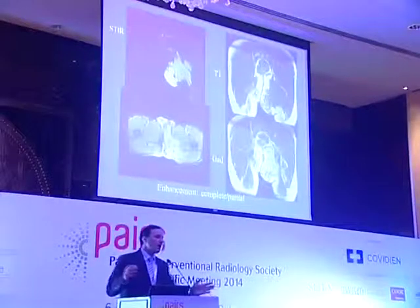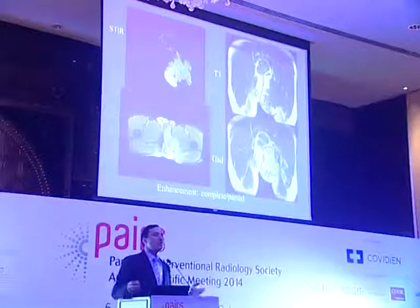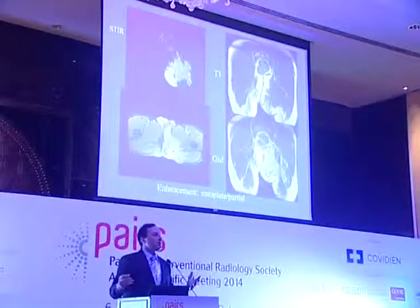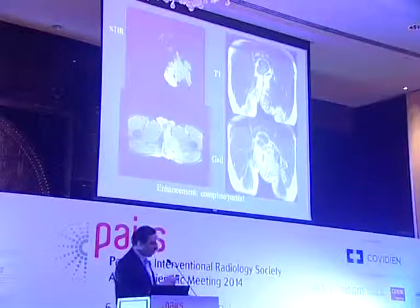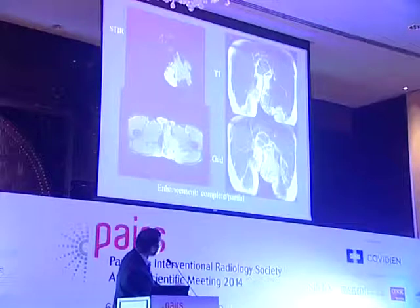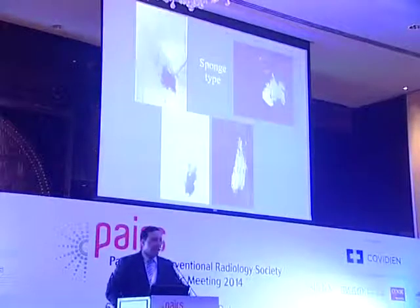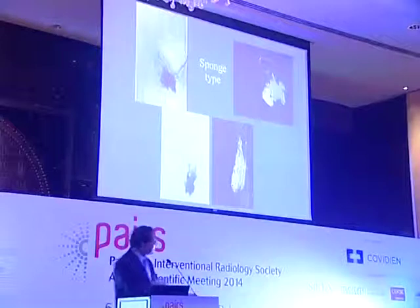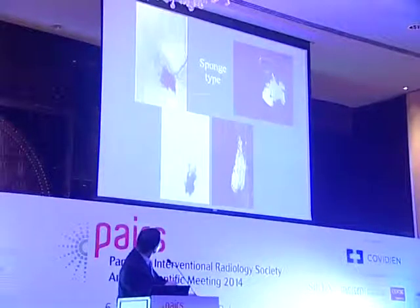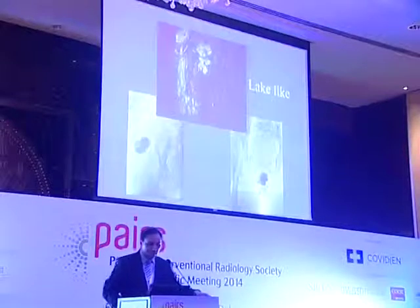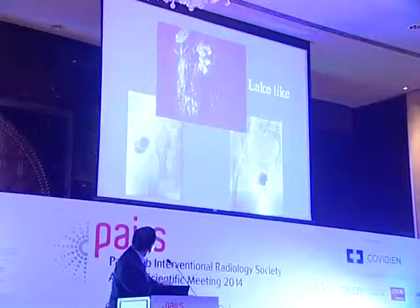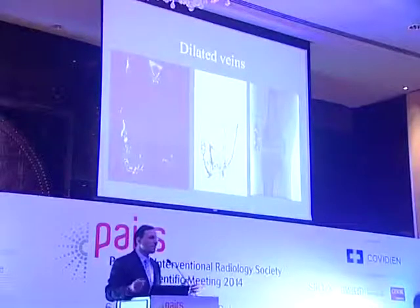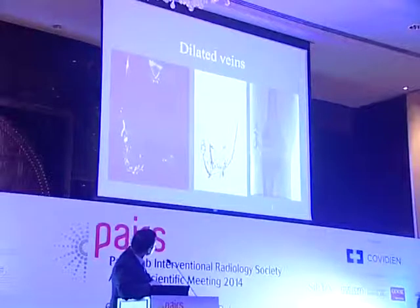Phlebolus can easily be seen on x-ray. What is commonly called hemangioma in the liver is actually a venous malformation — enhancement can be complete or segmental depending on lesion size. There are three geographic types: sponge type, lake type (just a pool of blood), and dilated veins. The MRI and venogram correspond to each other in each type.